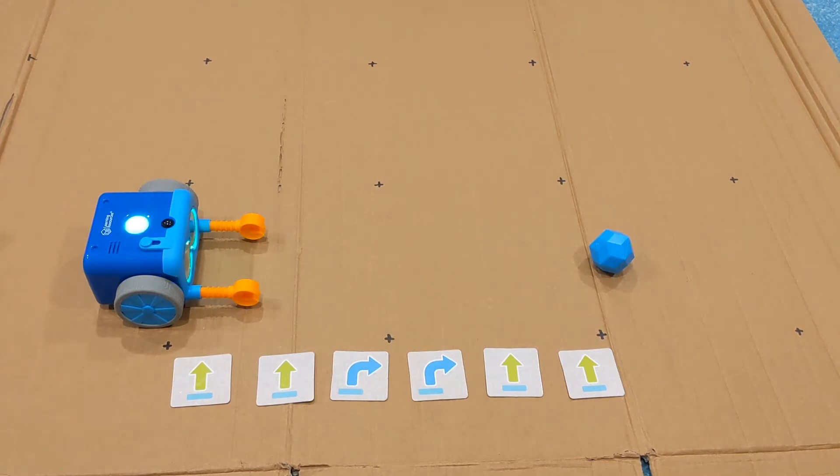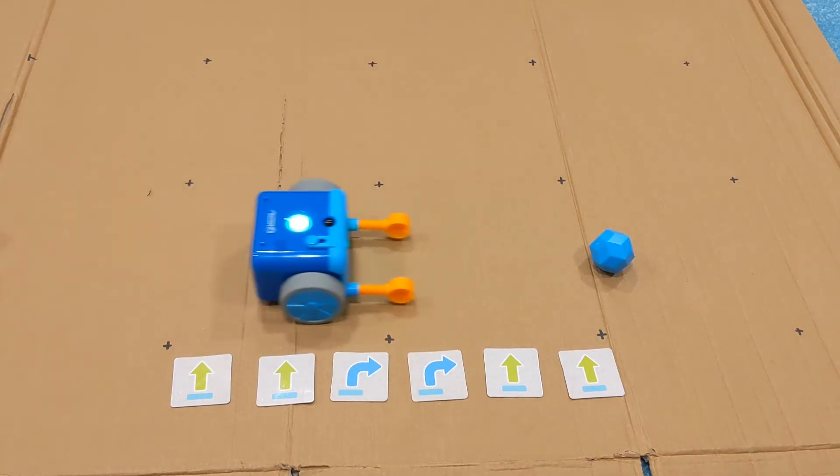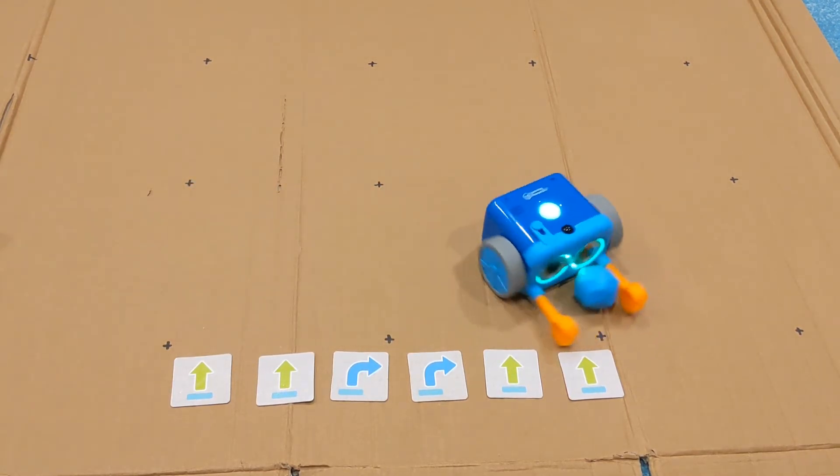Start off with a simple fetch program. Send Botly off to the object, turn around all the way and return back to where he started.